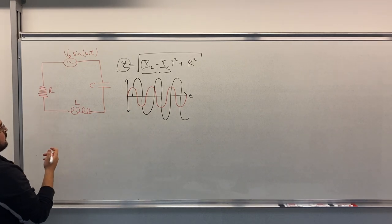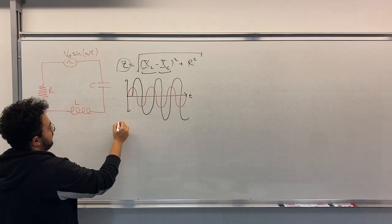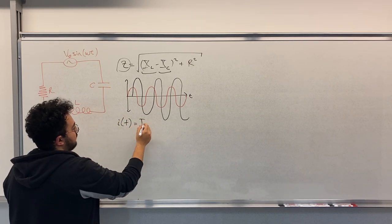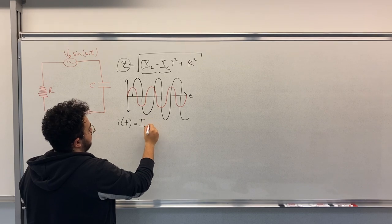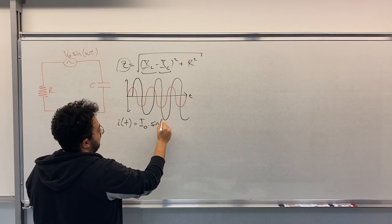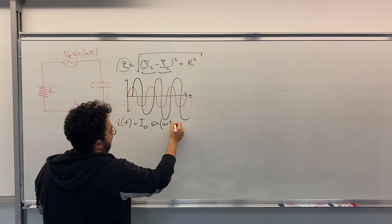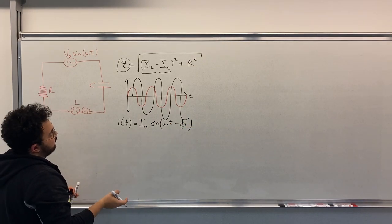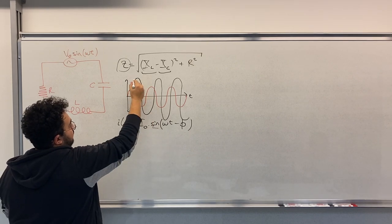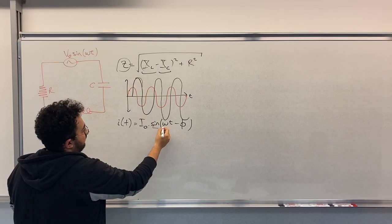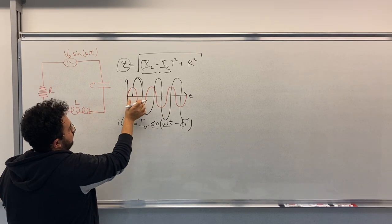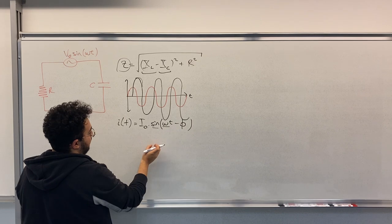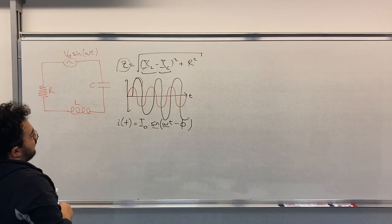So let's assume that the current in the circuit is I0 sin omega t minus phase. So as I've said before, this is sinusoidal and we have omega here and the same omega with the voltage. The difference is the phase and the magnitude.